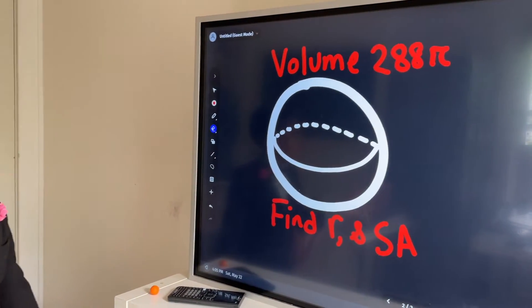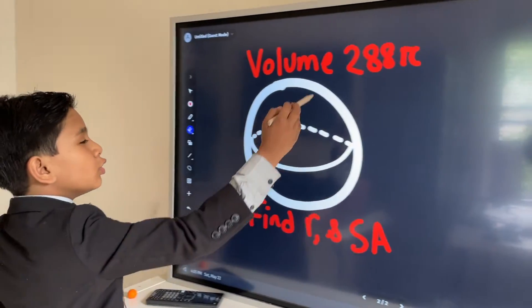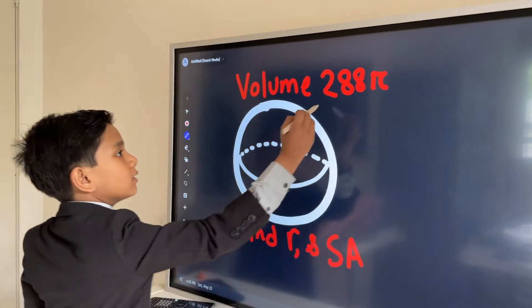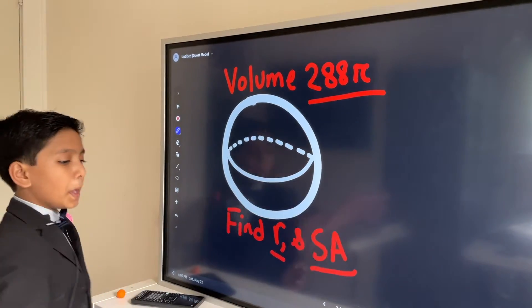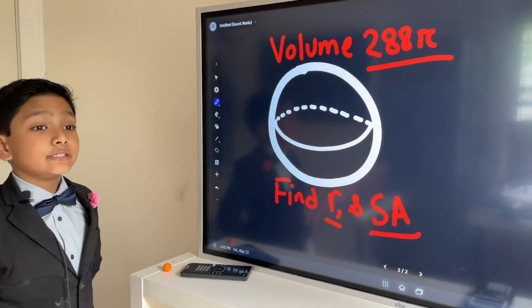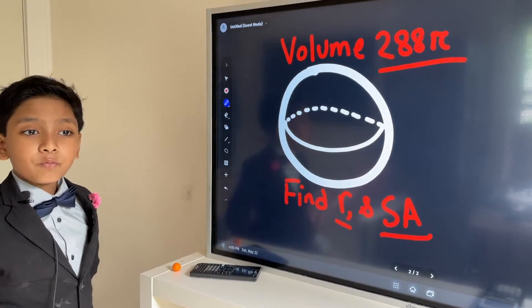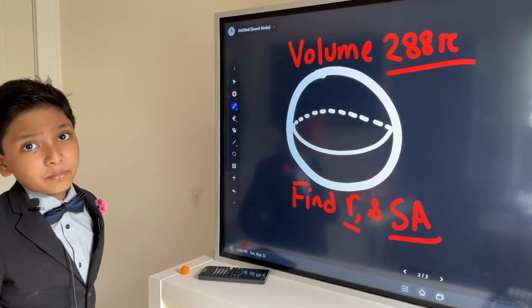So, the volume of the sphere is 288 pi, and we want to find the radius and the surface area. Now, I'll give you 5 seconds to try and do this on your own. But before that, you need to know some pretty important equations.